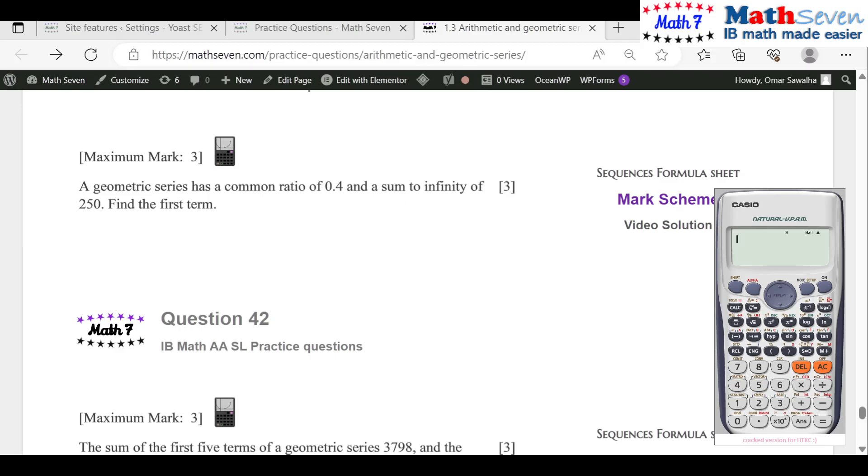250 equals u1, which we don't know, over common ratio is 0.4. So just multiply, cross multiplication, you get u1.